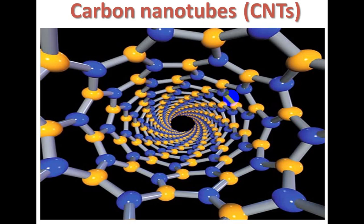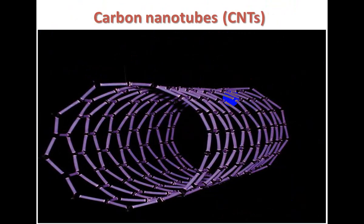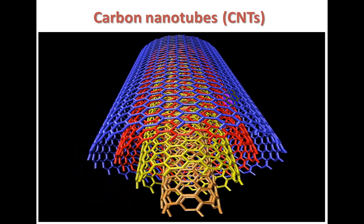This is an example indicating the structure of carbon nanotubes. This again explains the cylindrical structure of carbon nanotubes. This is another example showing the multi-concentric structure of cylindrical carbon nanotubes.